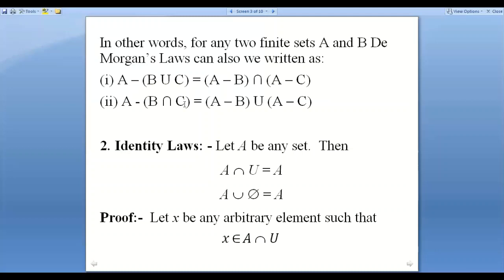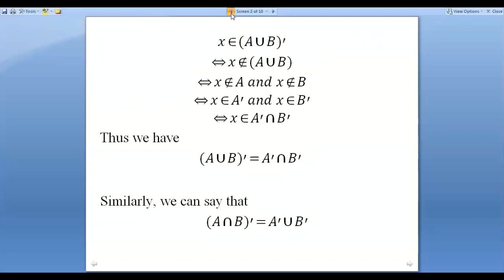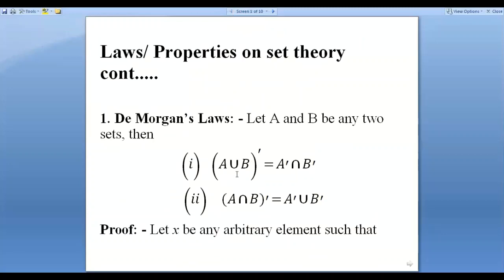In the same way, A minus (B intersection C) is equal to (A minus B) union (A minus C). So De Morgan's law can be asked either in the symbolic form — (A union B)' equals A' intersection B' — or theoretically, stated as: the complement of a union is equal to the intersection of their complements.